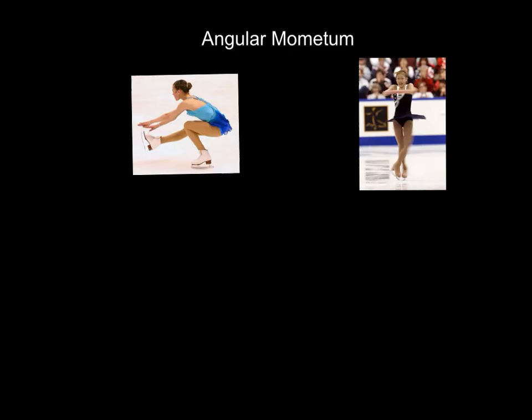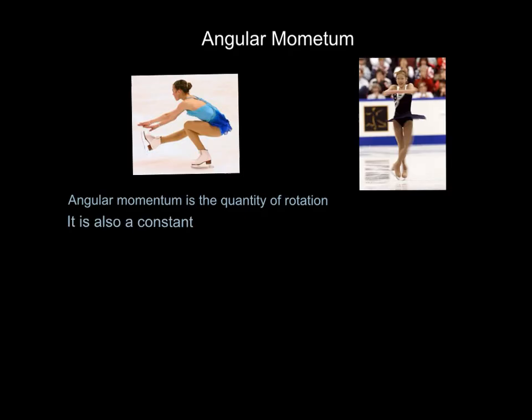Angular momentum - what is it? Angular momentum is the quantity of rotation. It's also what we call a constant, or a universal constant, so the quantity of rotation is a constant. Think of the Earth doing its rotations - it'll do 365 rotations around the Sun every single year. That's its angular momentum, its quantity of rotation, and it's a constant. It's done that number of revolutions around the Sun for billions of years. So angular momentum is a constant and it's the quantity of rotation.